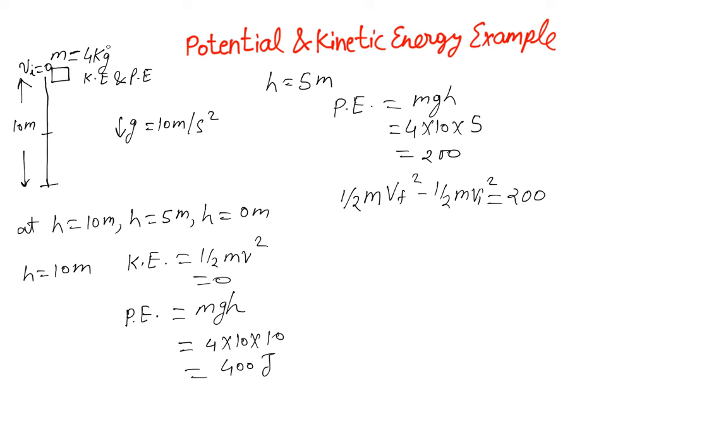Now vi which is the velocity here is 0 so that gives us half mvf squared equals 200 and that gives us the kinetic energy of the system at height 5 meters. And from here you can also calculate the velocity which turns out to be 10 meters per second if you use this equation.